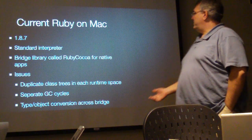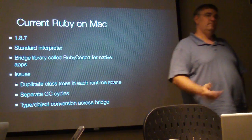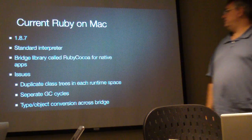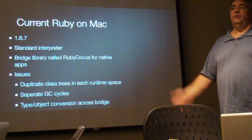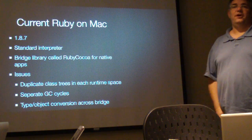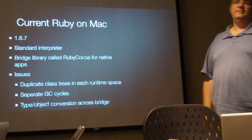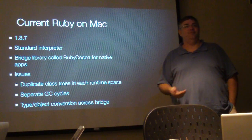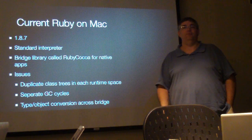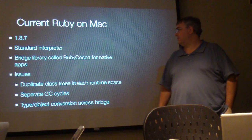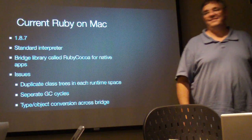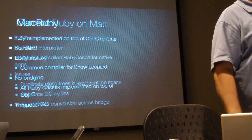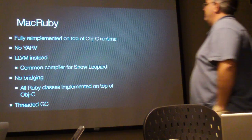The Ruby Cocoa project has been going on about six or seven years, since OS X first became stable with 10.2. They made great progress and Apple finally included it with Leopard. But users ran into issues: duplicate memory, having to manage two stacks. And they said there's got to be a better way — and that better way is MacRuby.